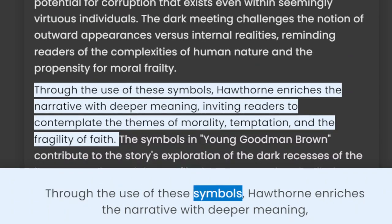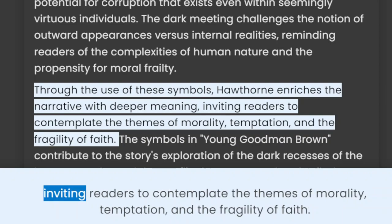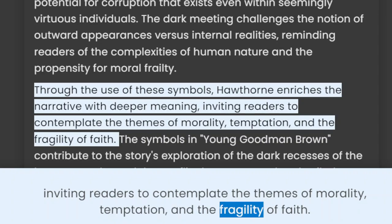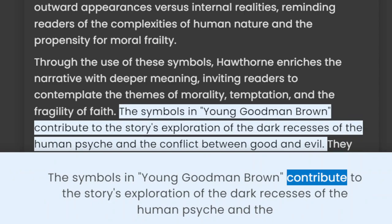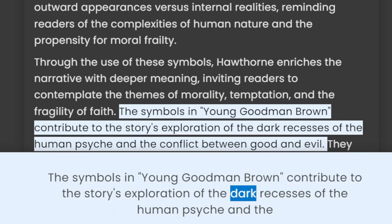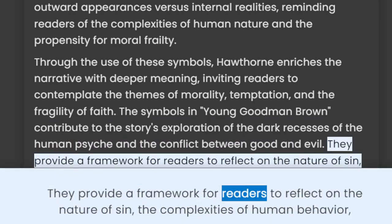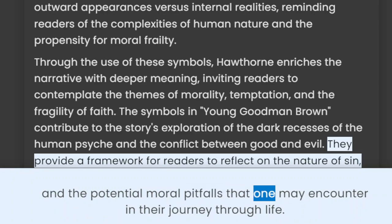Through the use of these symbols, Hawthorne enriches the narrative with deeper meaning, inviting readers to contemplate the themes of morality, temptation, and the fragility of faith. The symbols in Young Goodman Brown contribute to the story's exploration of the dark recesses of the human psyche and the conflict between good and evil. They provide a framework for readers to reflect on the nature of sin, the complexities of human behavior, and the potential moral pitfalls that one may encounter in their journey through life.